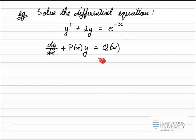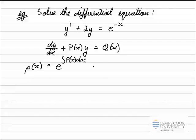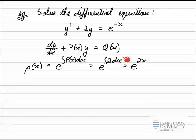From that, I know I need the integrating factor, so I'll calculate it. The formula for the integrating factor, denoted ρ(x), is e to the power of the integral of p(x) dx. Since p(x) is just 2, I compute the integral of 2 with respect to x, which is 2x. Note that I do not include the arbitrary constant here, as constants will be added later. So the integrating factor is e^(2x).